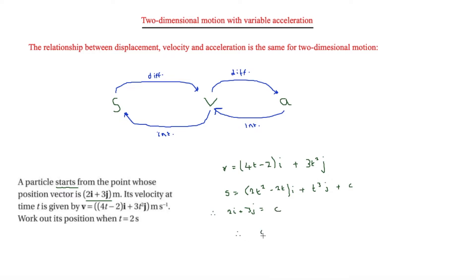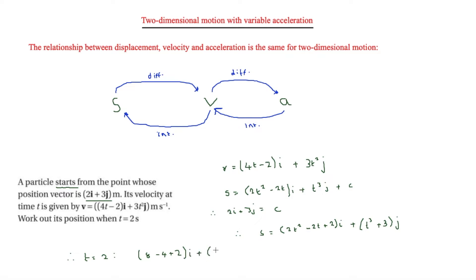Therefore s = (2t² − 2t + 2)i + (t³ + 3)j. To find the position at t = 2, we substitute t = 2: (8 − 4 + 2)i + (8 + 3)j = 6i + 11j. So the final answer is 6i + 11j.